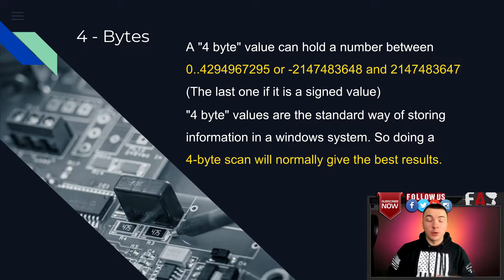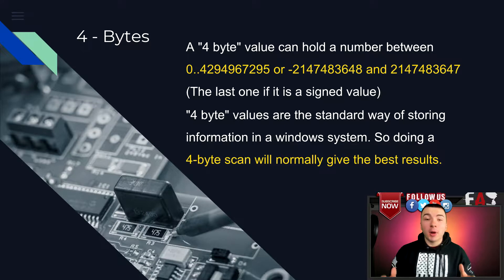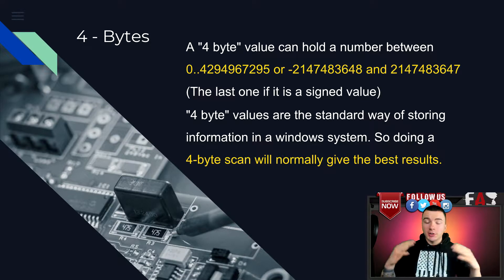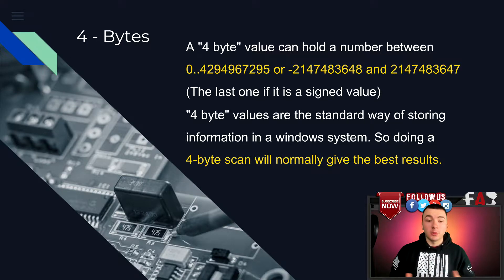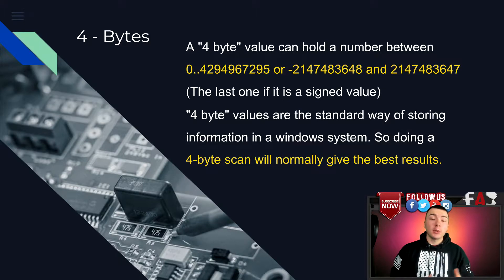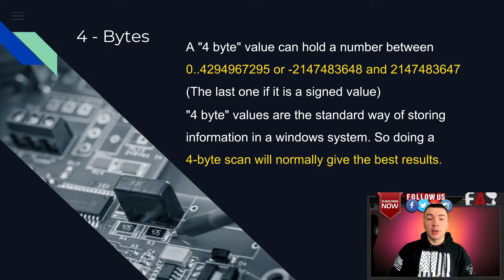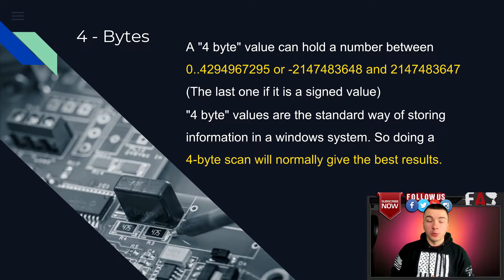Here's an example of Mortal Kombat. The next value is the 4-byte scan. The 4-byte scan is the holy grail of scan types because it finds just about everything in any game except for decimal values. A 4-byte scan covers 0 to 4.2 billion, or negative 2.1 billion to positive 2.1 billion. So 9 times out of 10 when you're trying to find a value with Cheat Engine, a 4-byte scan is what you will use.